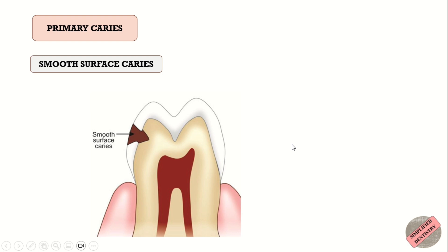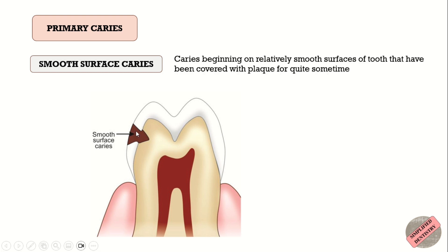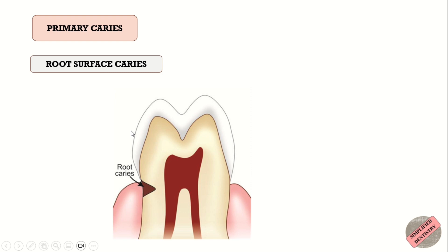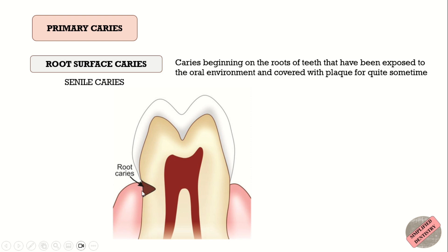Smooth surface caries does not begin in the pits and fissures but on relatively smooth surfaces of the tooth that have been covered with plaque for quite some time. Unlike pit and fissure caries, it initially involves a larger area of enamel on its outer surface. Root surface caries, also referred to as senile caries, begins on the roots of the teeth that have been exposed to the oral environment and covered with plaque. The progression of this type of caries is rapid and should be detected and checked in time.